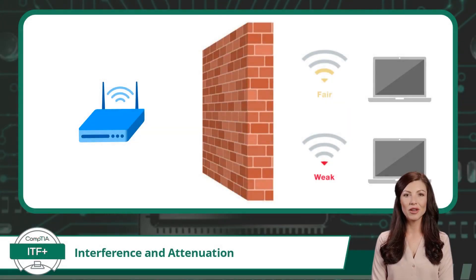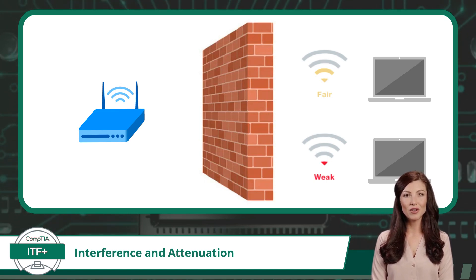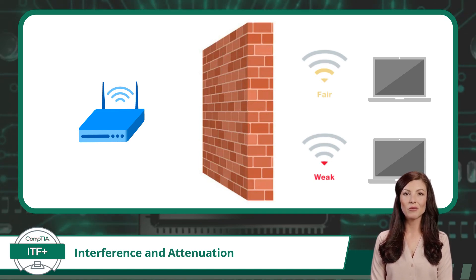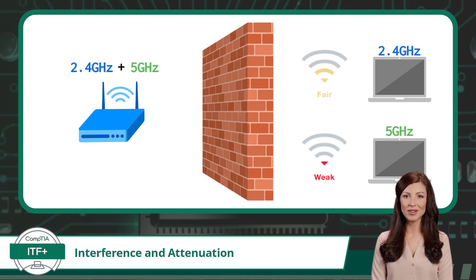Now let's explore the second type of interference: physical obstructions. A physical obstruction can also introduce signal interference. For instance, any solid structure such as a brick wall can cause interference and weaken a wireless communication signal that has to pass through it. Just like EMI, this form of physical interference can also lead to slow or unstable communications. The frequency of a wireless signal will also affect how much interference is experienced from a physical obstruction.